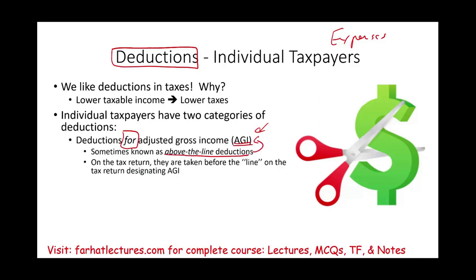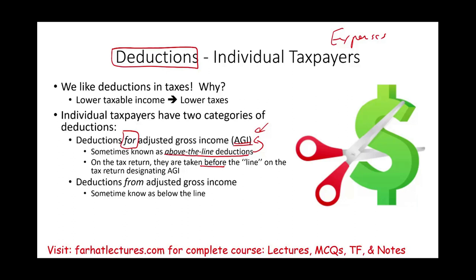On the tax return, they are taken before the line — that's why it's called above-the-line. And we have deductions from adjusted gross income, which means below-the-line. Those deductions are below-the-line.